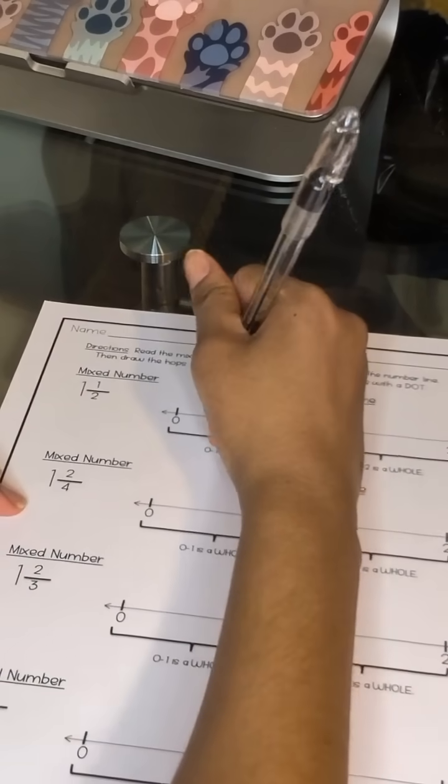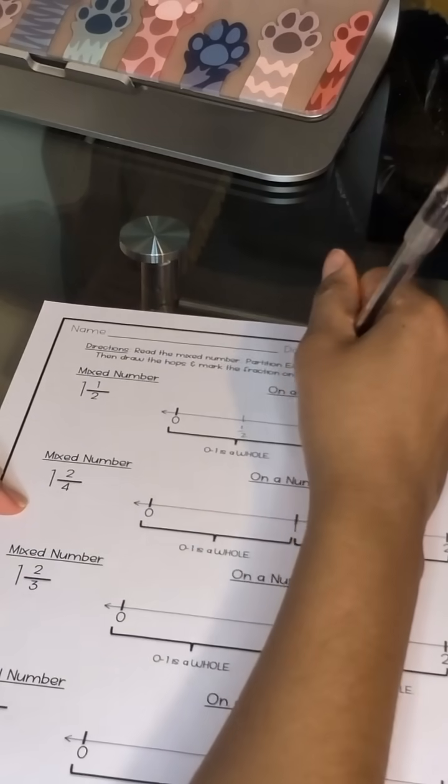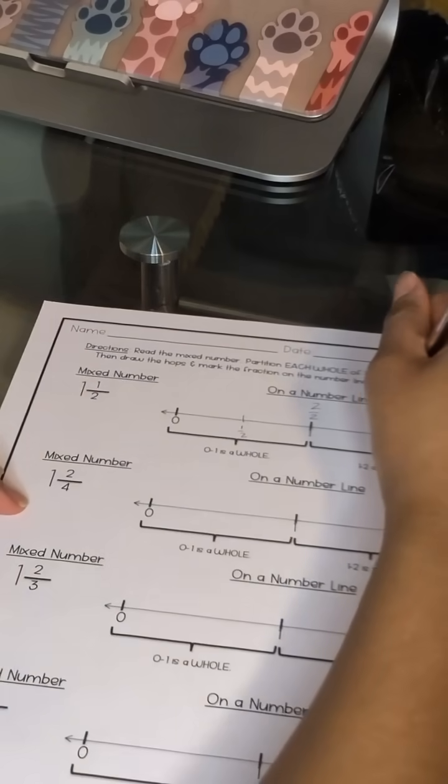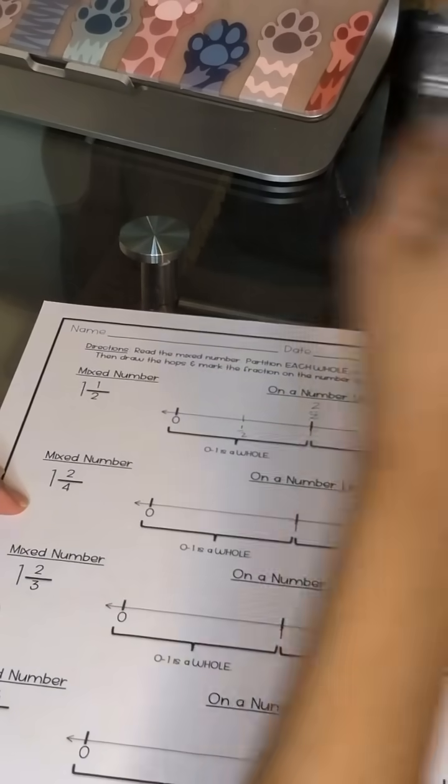And that means our fraction has one over two and two over two as its whole, which means the next number on this number line is three over two. And the last fraction on this number line is four over two.